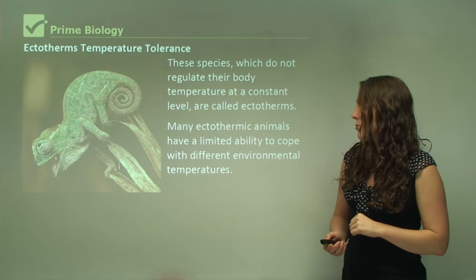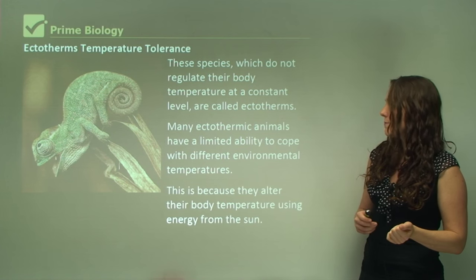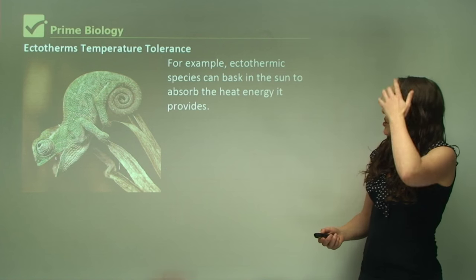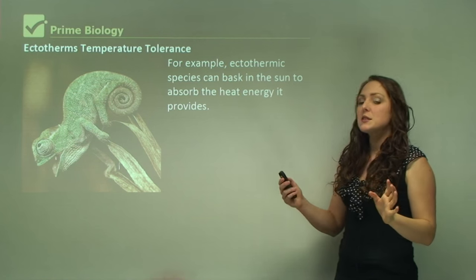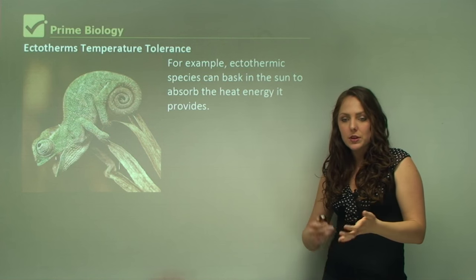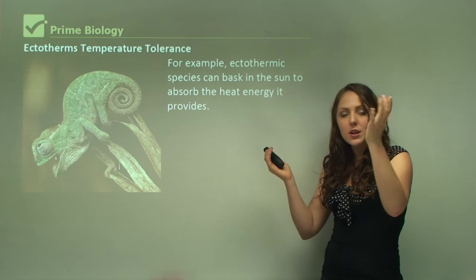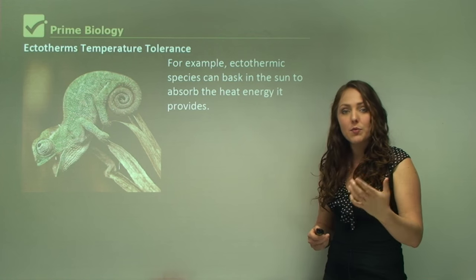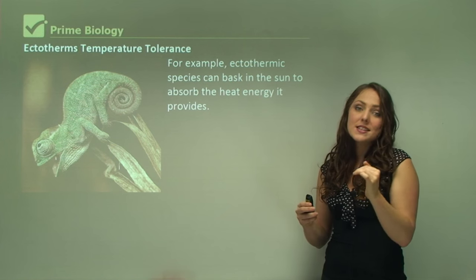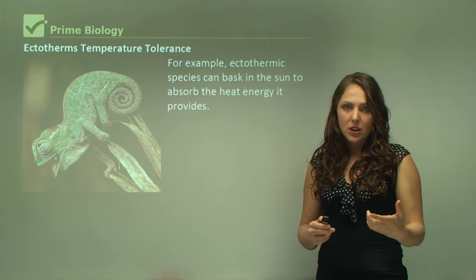Many ectothermic animals have a limited ability to cope with different environmental temperatures because they alter their body temperature using energy from the Sun. Ectothermic species can bask in the Sun to absorb the heat energy it provides — snakes and lizards will do this, absorbing the Sun's energy. By increasing the heat on the outside of their body, it increases the temperature of their blood, which in turn increases their metabolic processes.